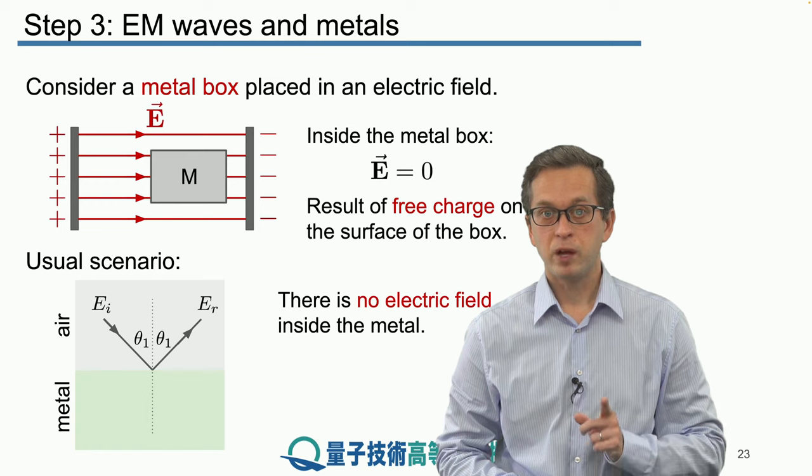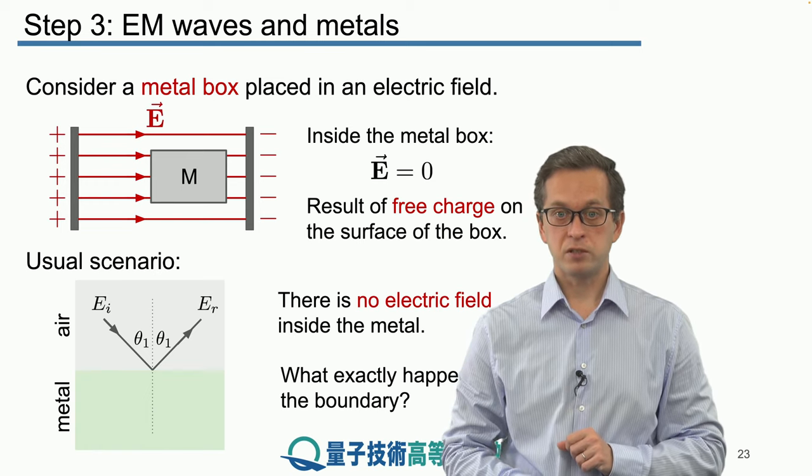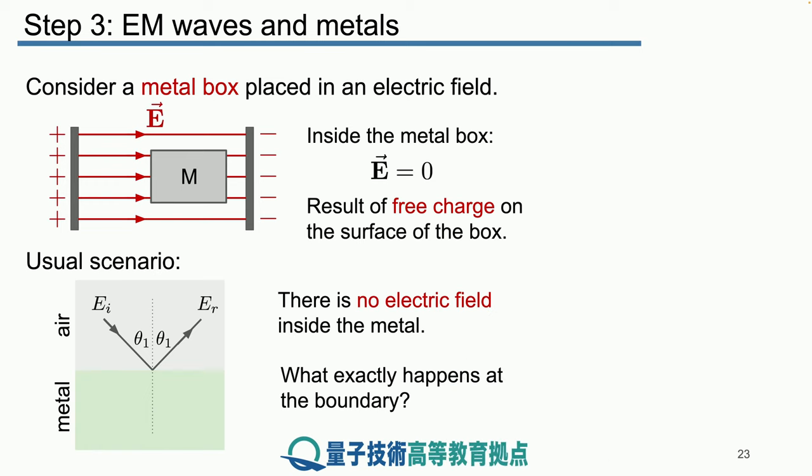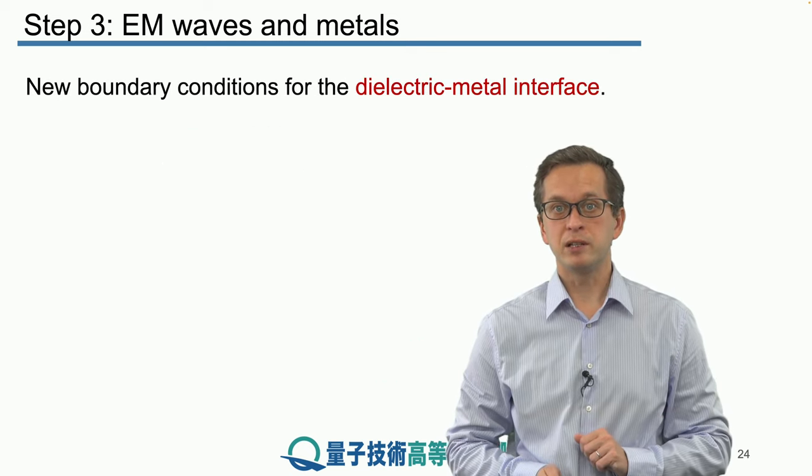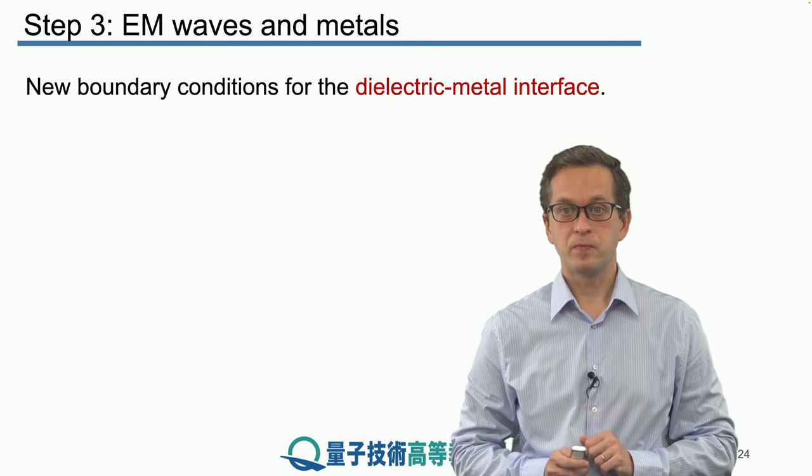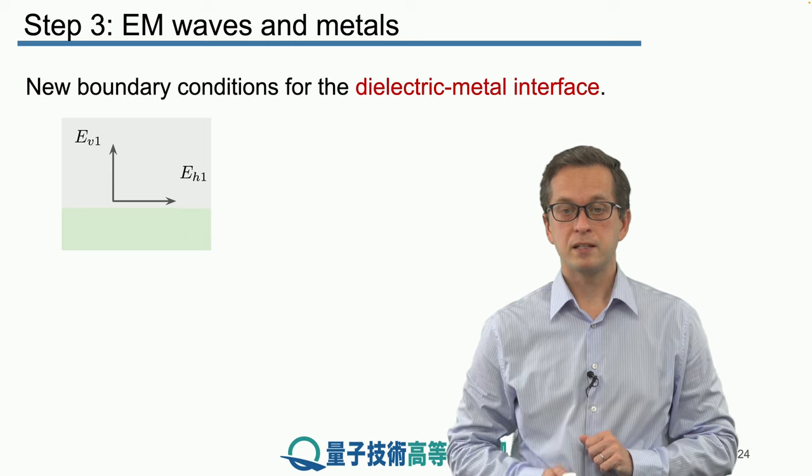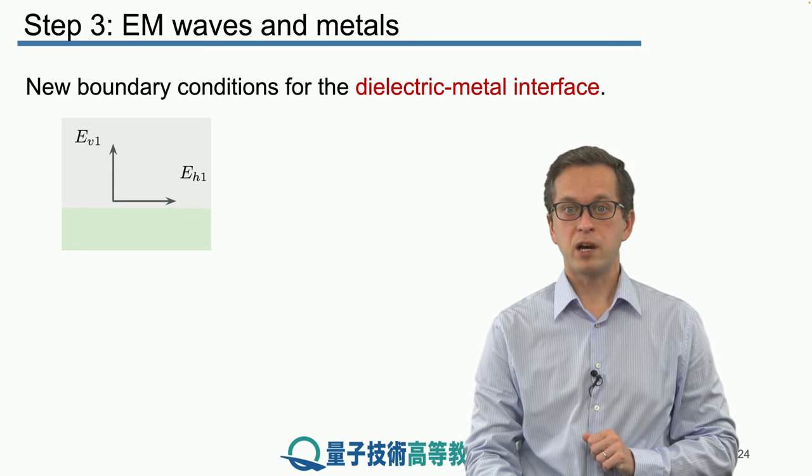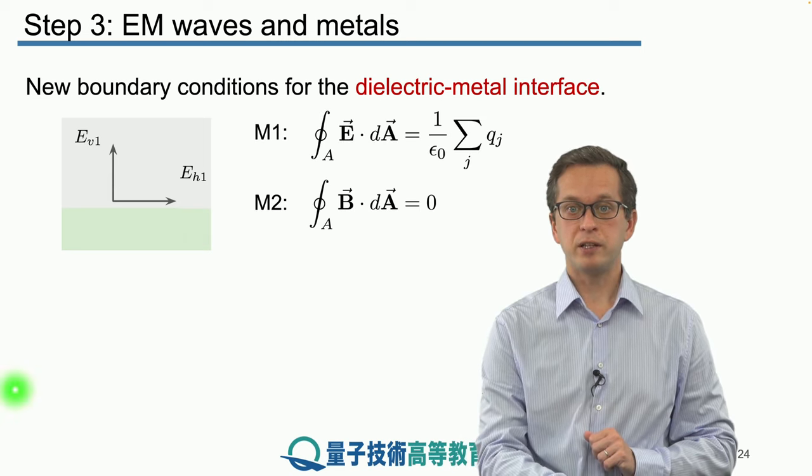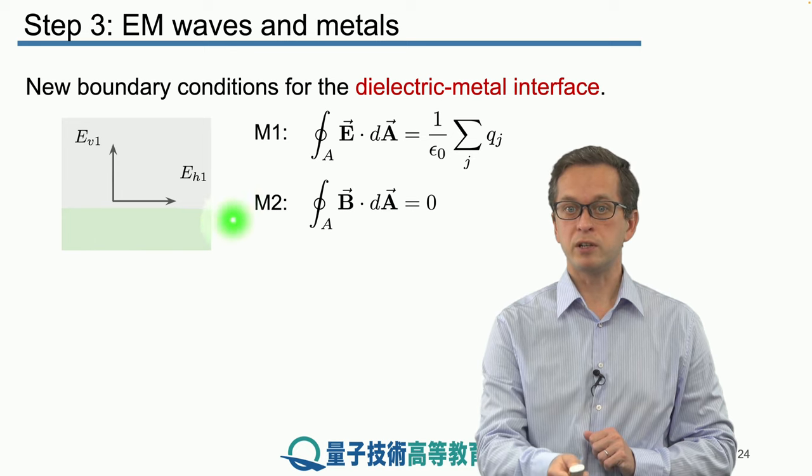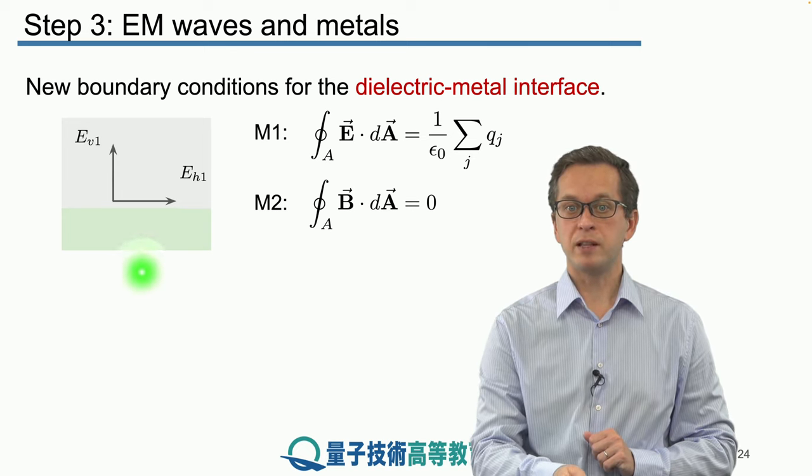This means that we have to derive new boundary conditions for this type of interaction. So let's do that very quickly. The logic is exactly the same as we have seen in the case of the two dielectrics, but the consequences will be a little bit different. This is our scenario. We've got our dielectric here, represented by the gray area, and this green shaded area is our metal.